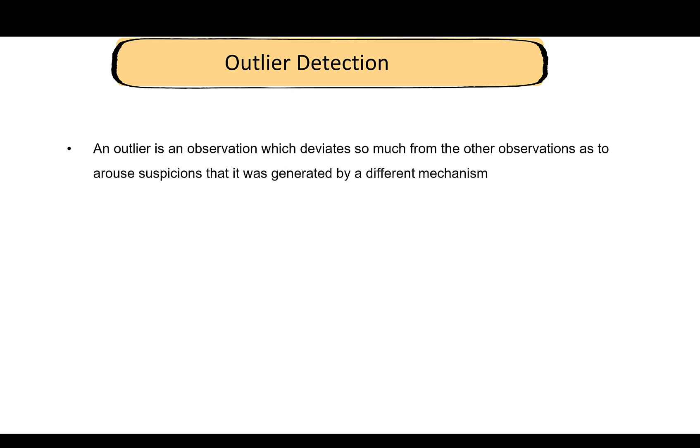In the previous scatter plot we saw that there were some outliers. This brings us to outlier detection. What is an outlier? An outlier is an observation which deviates so much from the other observations that it arouses suspicion that it was generated by a different mechanism. The process that led to an outlier is probably different from the process that leads to the rest of the data.